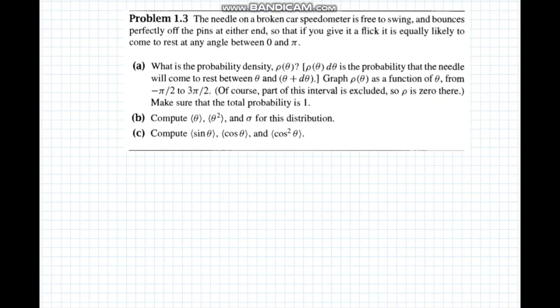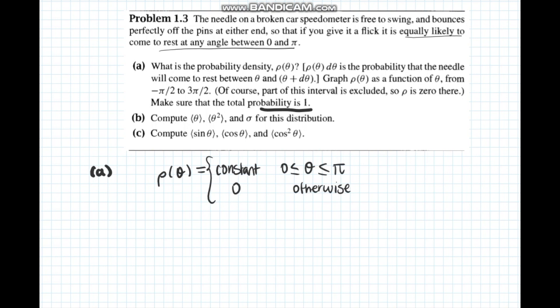Problem 1.3: The needle on a broken car speedometer is free to swing and bounces perfectly off the pins at either end, so that if we give it a flip it is equally likely to come to rest at any angle between 0 and pi. Part a asks for the probability density rho of theta. We know it equals some constant between 0 and pi and 0 at any other angle. Since the total probability is always 1, integrating rho of theta with respect to theta between 0 and pi gives 1, letting us find rho of theta equals 1 over pi.